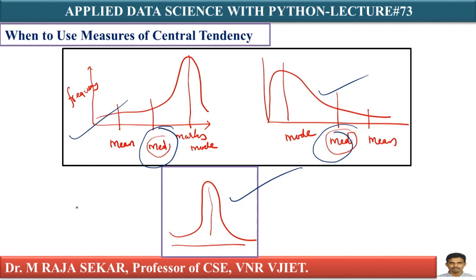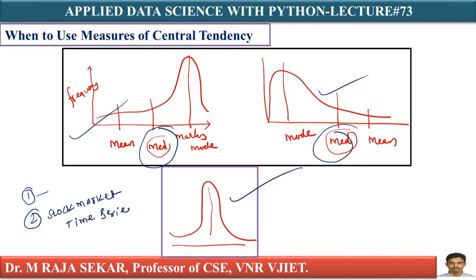In my next lecture, I will work with two types of data sets. These two types of data sets are downloaded from Kaggle. The first one is a height, weight, body mass data set. The second one is a stock market — a time series data set. We will try to understand skewness on these two types of data sets with appropriate examples and see different cases.